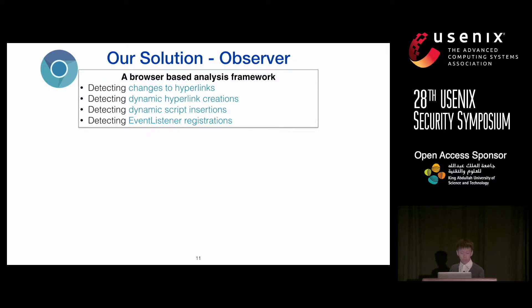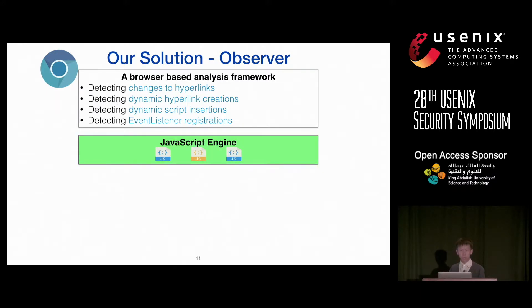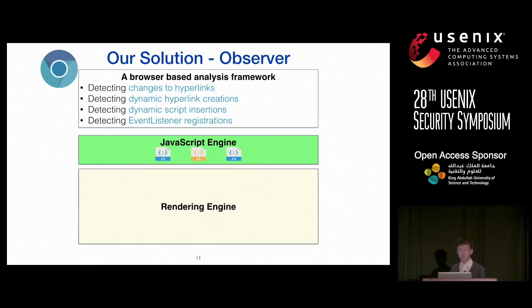To solve these challenges, we developed a browser-based analysis framework called Observer. By modifying the browser, we added functionality to track all events related to click interception. Using Chrome as an example: today's browser consists of two important parts — the JavaScript engine, which provides an environment for JavaScript programs to execute, and the rendering engine, used for loading, parsing, and rendering content from remote hosts.